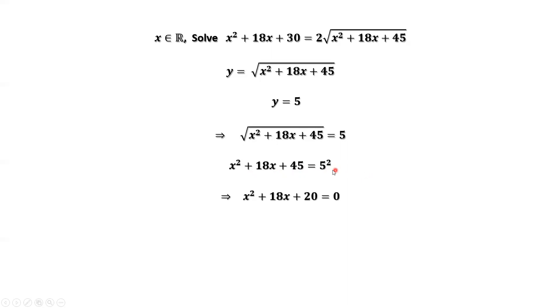Simplify both sides and move the right-hand side number to the left-hand side. Continue to simplify. We have this quadratic equation: x squared plus 18x plus 20 equals 0.